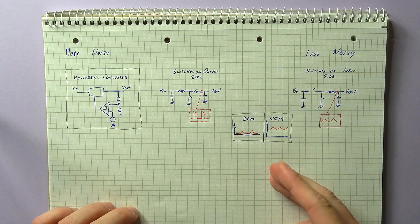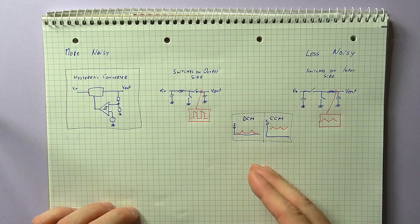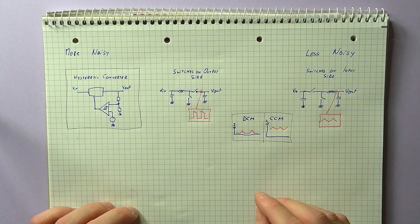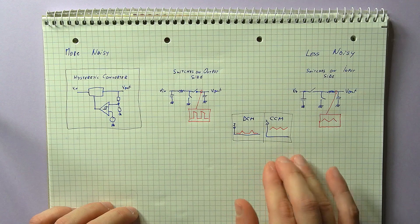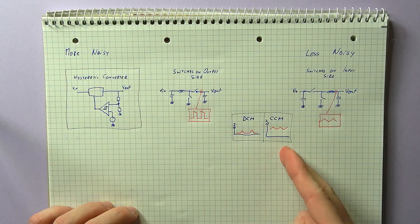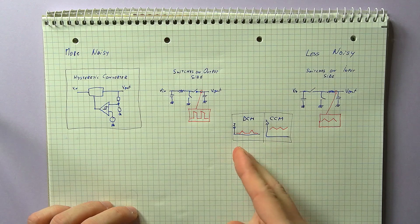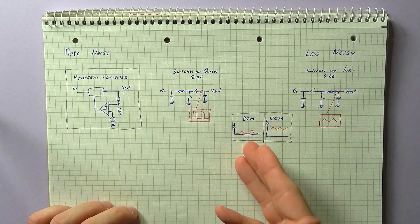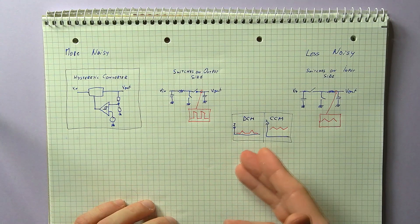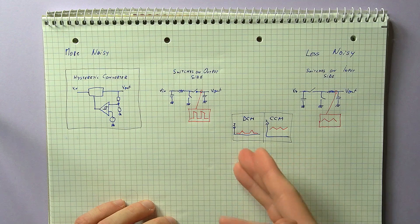Last thing to mention is the conduction mechanism. Just because you have a buck does not mean it will be less noisy. It also depends on whether you can keep it continuously delivering current, so keep it in the continuous conduction mode. Once you put it into discontinuous conduction mode, where the inductor current goes through zero, the output will end up having more noise. Because again, you end up delivering energy in chunks.